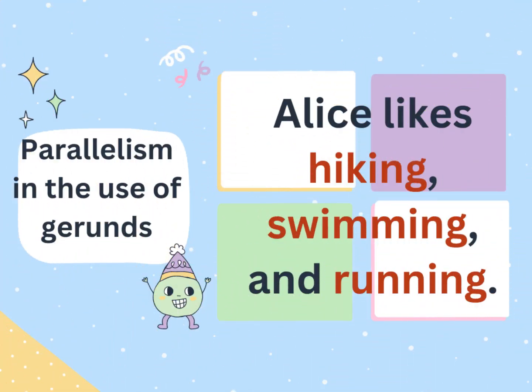Now study this example sentence: Alice likes hiking, swimming, and running. The words hiking, swimming, and running are all gerunds. Therefore, this sentence has parallelism.